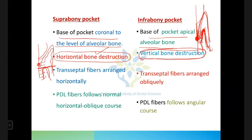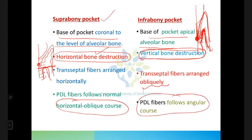Remember: supra-bony pockets have horizontal bone destruction; intra-bony pockets have vertical bone destruction. Transeptal fibers in intra-bony pockets are arranged obliquely. PDL fibers follow a horizontal-oblique course in supra-bony pockets, but an angular course in intra-bony pockets. In supra-bony pockets the periodontal ligament and alveolar crest gradually attain an apical position while maintaining their original morphology and architecture.